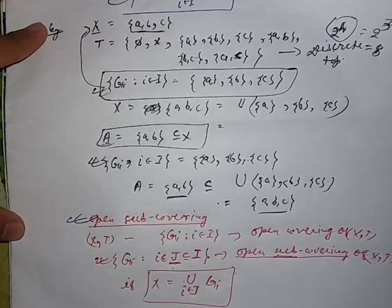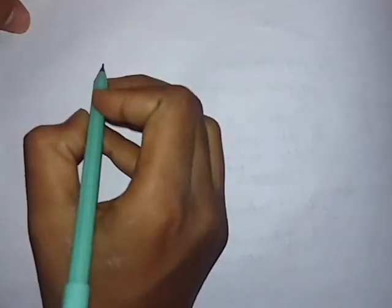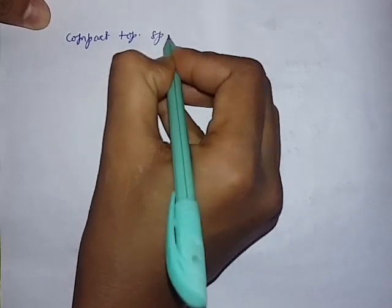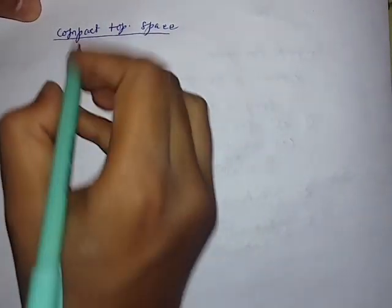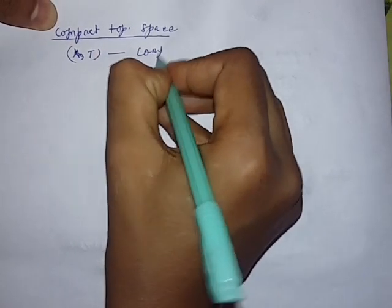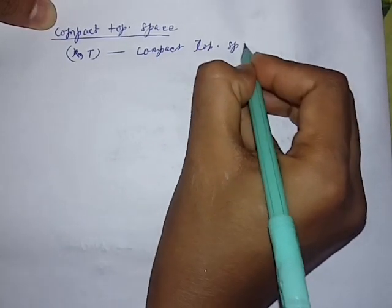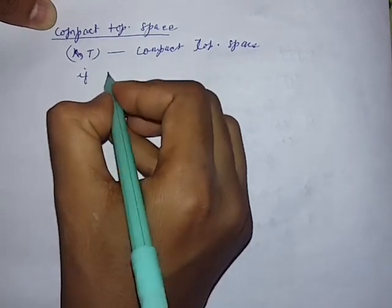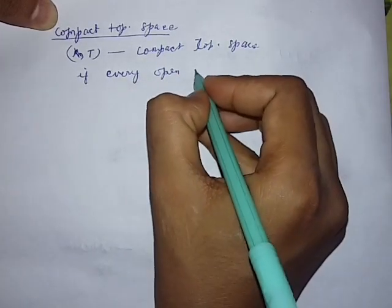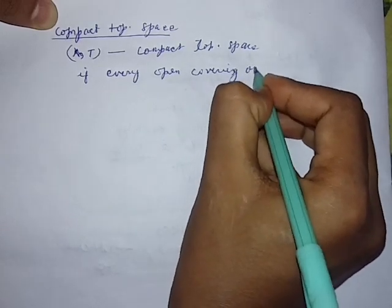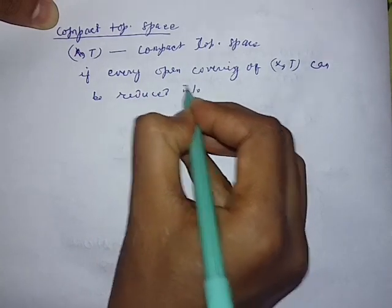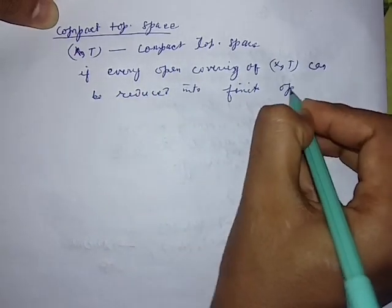Now we understand the meaning of a compact topological space — it is related to the definition of open sub-covering. A topological space (X, T) is called a compact topological space if every open covering of (X, T) can be reduced to a finite open sub-covering.